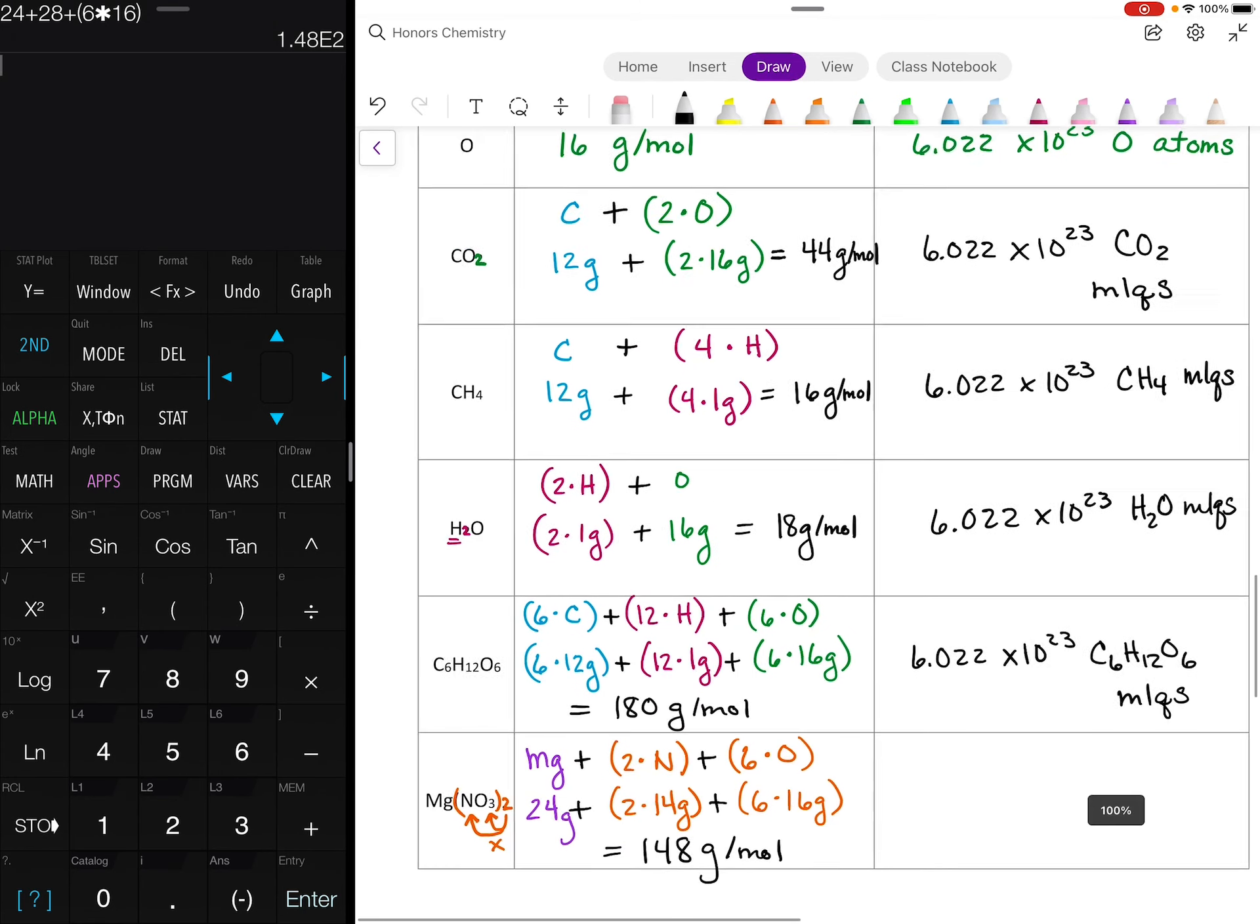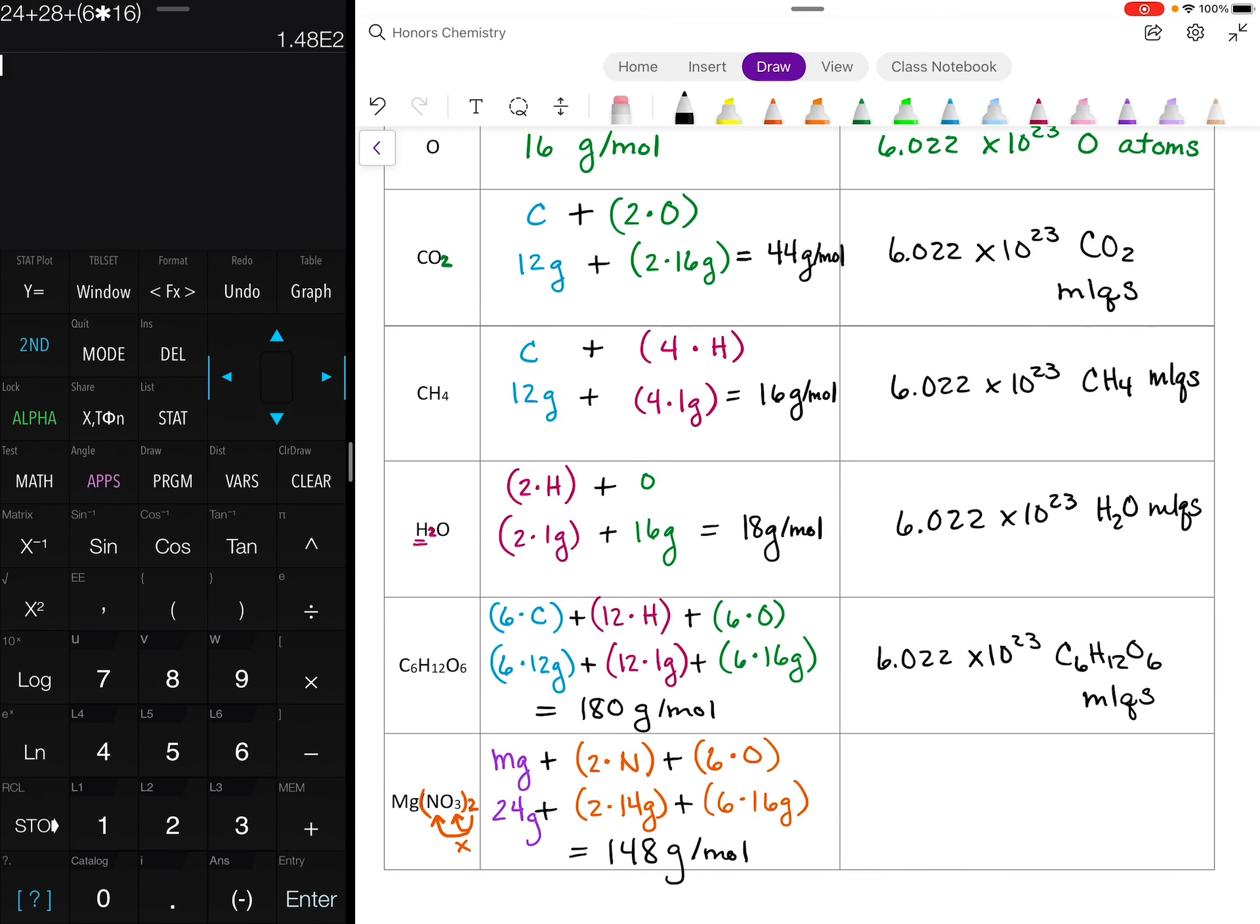Now in this case, this is actually an ionic compound. So I know everything else has been molecules, but we have 6.022 times 10 to the 23rd formula units for an ionic compound, of magnesium nitrate, NO3 subscript 2. I hope that was helpful for you. And we have practice problems.